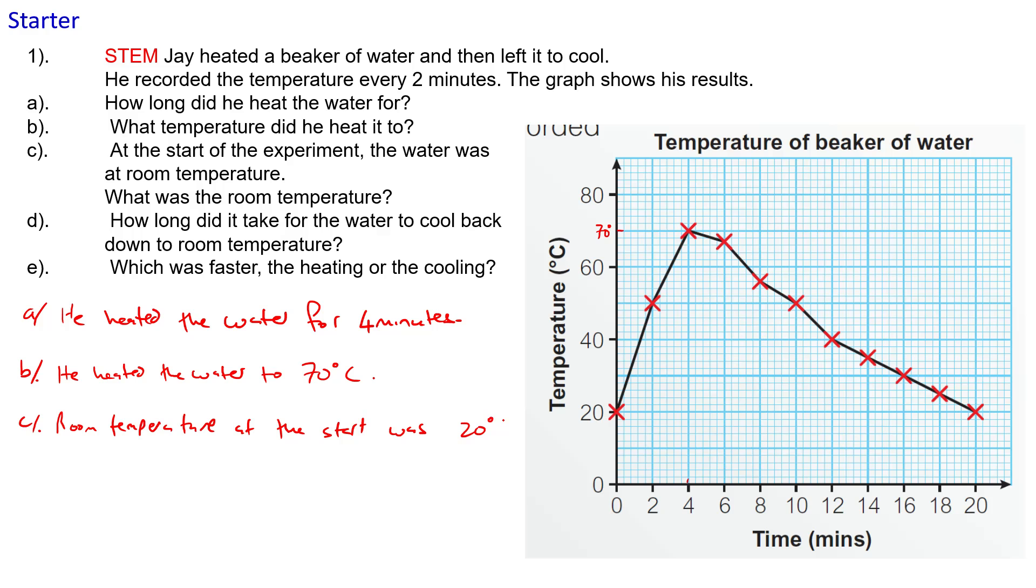d: how long did it take the water to cool back down to room temperature? Well, it went from a maximum there at 70 and it's got to come back down to 20 over here. So it took 20 minutes to get back to 20, but the maximum temperature was at 4, so you need to do 20 take away 4, which is equal to 16 minutes to cool.